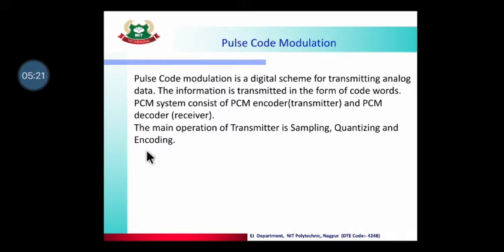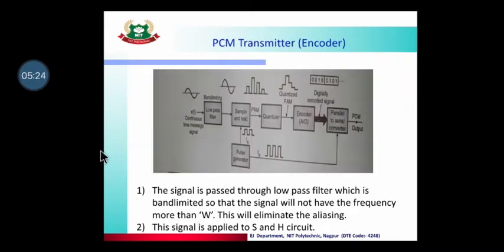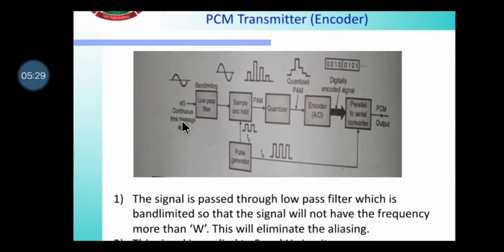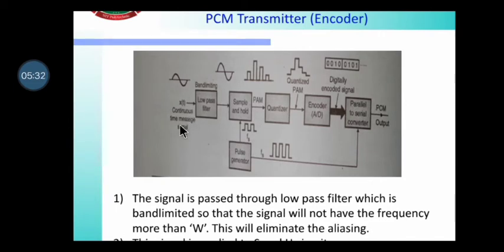Looking at the block diagram of the PCM Transmitter, first there is a continuous signal which we pass through a low-pass filter so that it becomes band-limited. The low-pass filter allows only frequencies up to a certain limit, so whatever signal passes through is band-limited and we know its perfect frequency range.